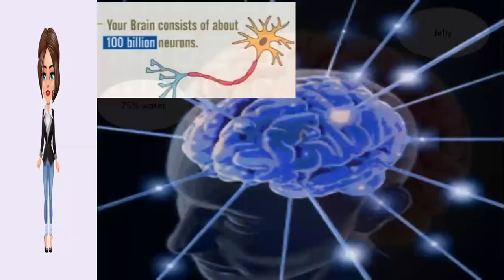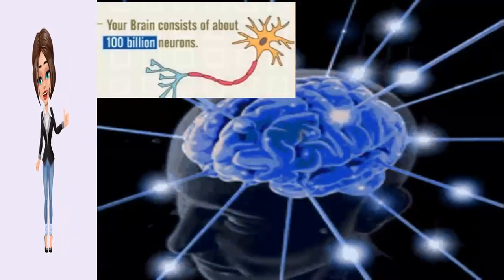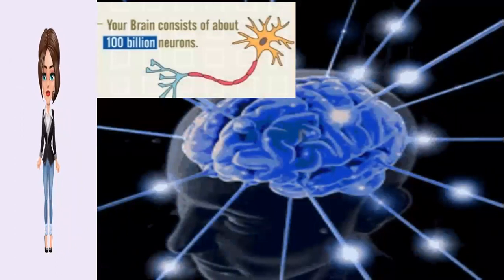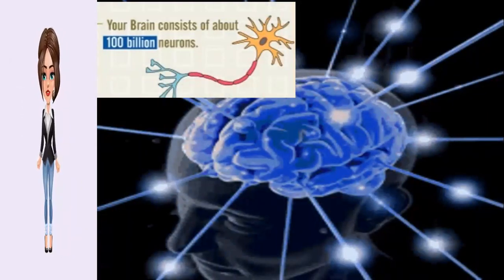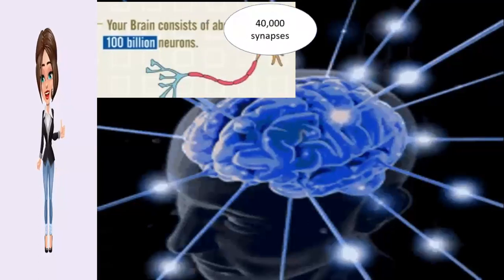What is unique about the human brain? It has 100 billion neurons and 10 to 50 fold more glial cells. These neurons are connected to other neurons by up to 40,000 synapses.